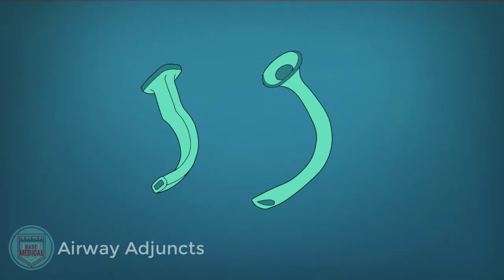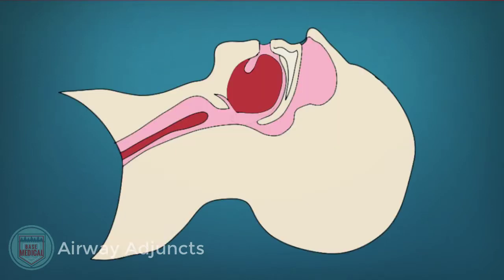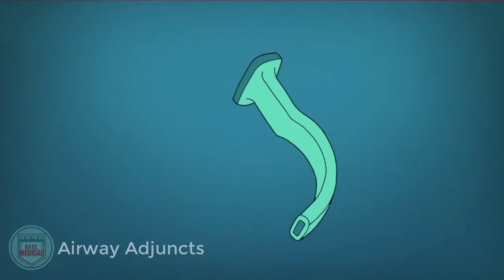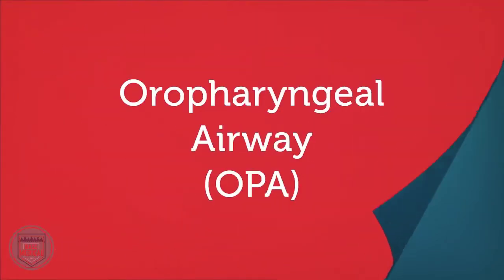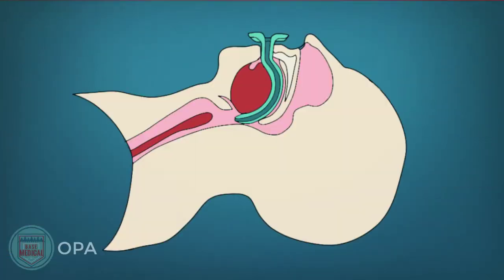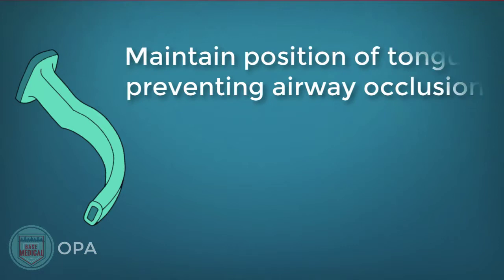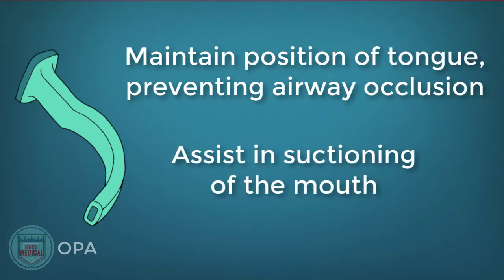OPAs and NPAs are airway adjuncts that help us maintain a correctly positioned tongue and open airway in unconscious patients. The OPA stands for oral pharyngeal airway, since they are inserted into the oral pharynx of the mouth. They have two main purposes: to prevent the tongue from falling back and blocking the airway, and to make it easier to suction the mouth if necessary.